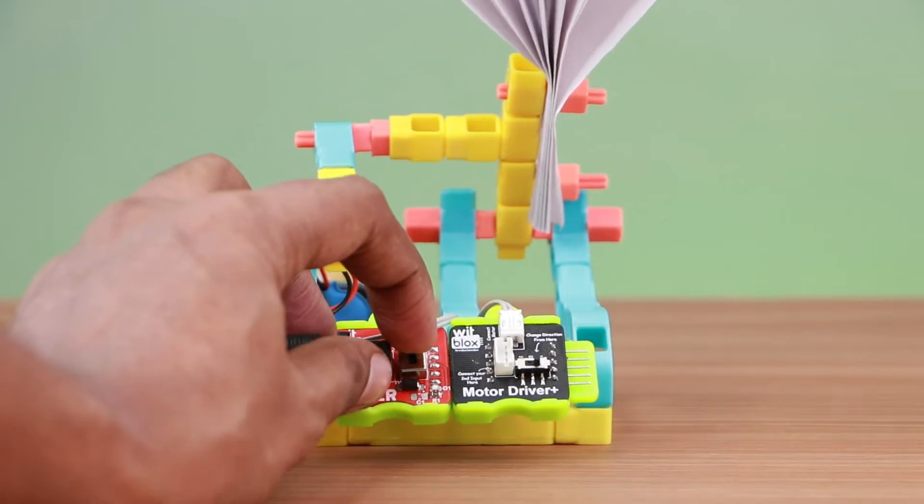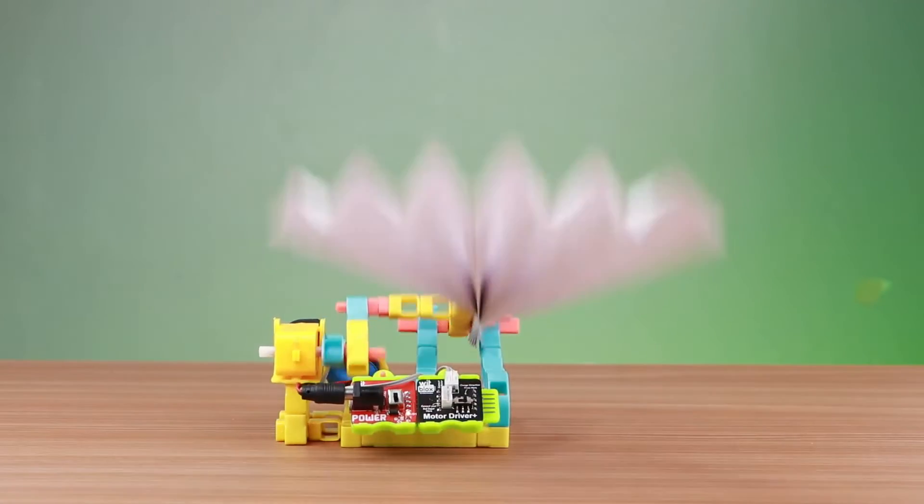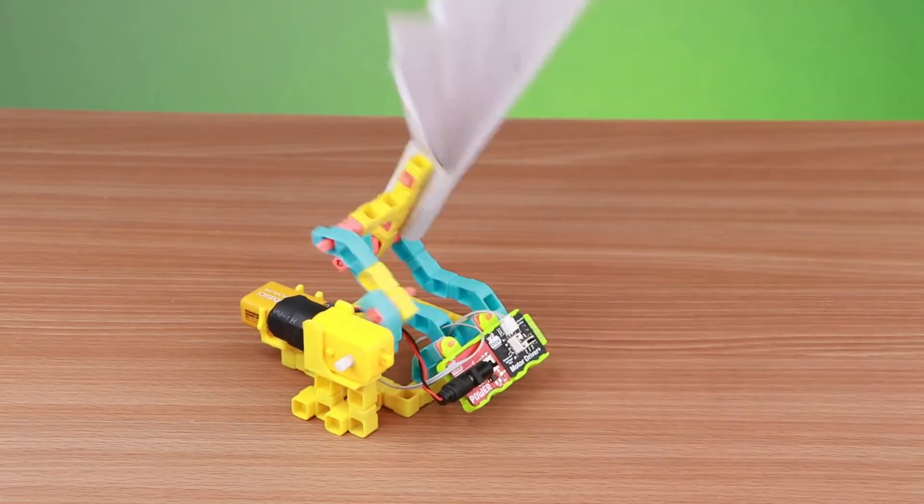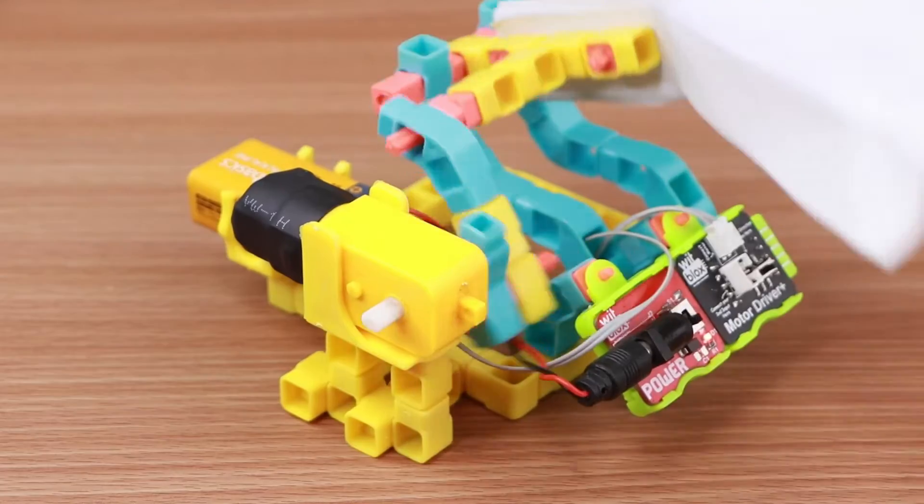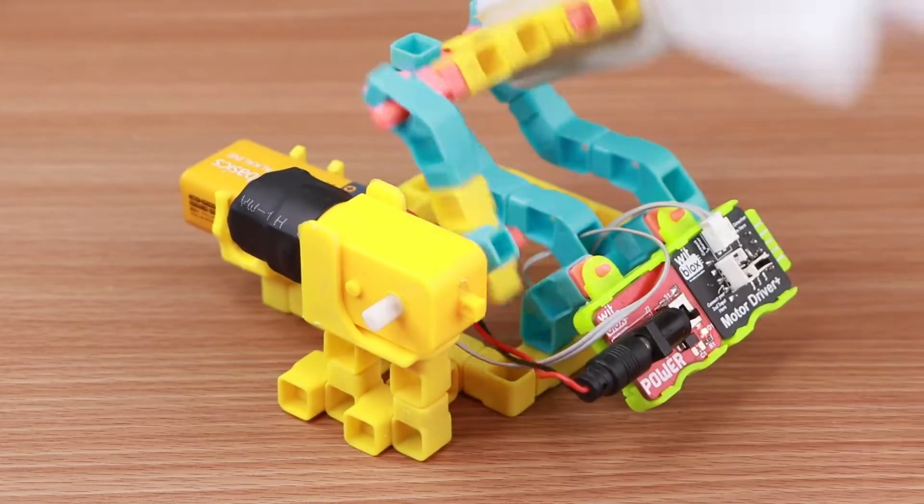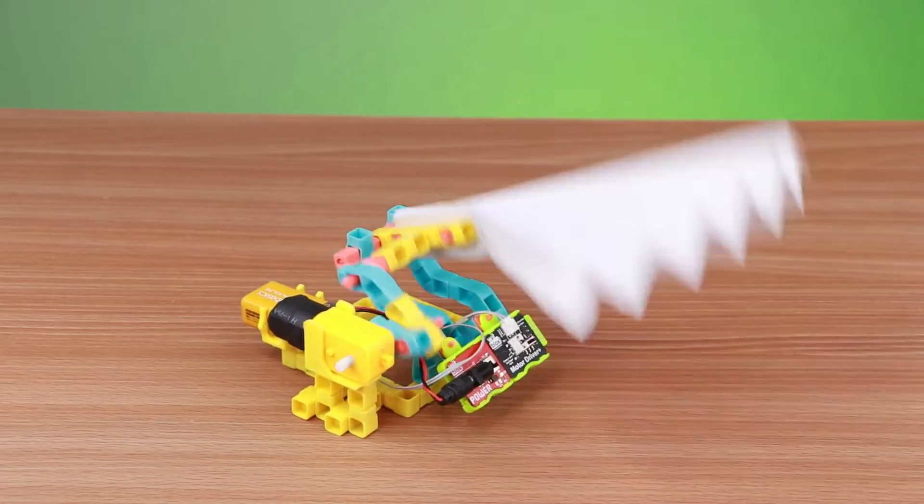Today we are going to build a robot that will work to cool us when the weather is hot. In this project, we are going to build a cooling fan mechanism. This cooling fan uses a motor-driven mechanism to move a paper fan that propels air towards the user. Let's get started.